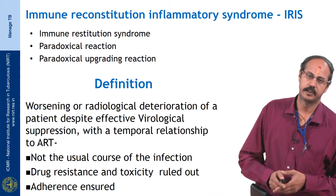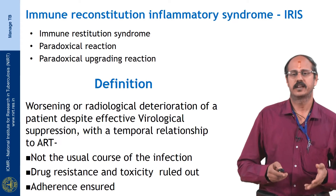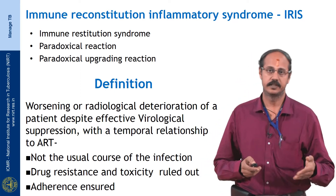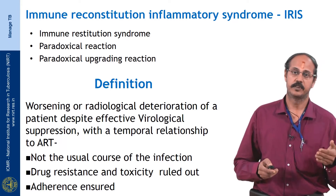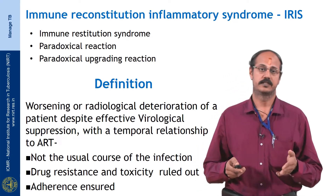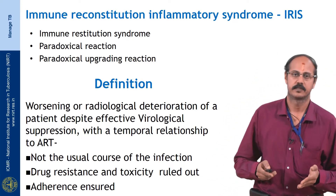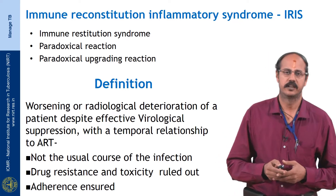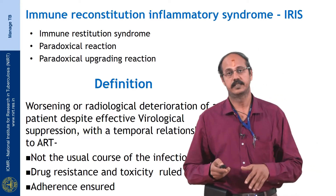Immune reconstitution inflammatory syndrome is an underdiagnosed and underestimated syndrome, more commonly occurring when ART is started very close to the intensive phase of TB treatment. Our studies have reported the highest incidence of IRIS in the range of 36 to 58 percent. It is also called paradoxical reaction or paradoxical upgrading reaction — defined as worsening or radiological deterioration in a patient with temporal improvement on specific therapy such as TB treatment.